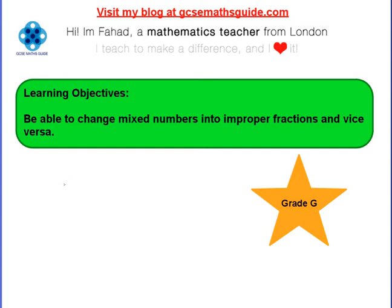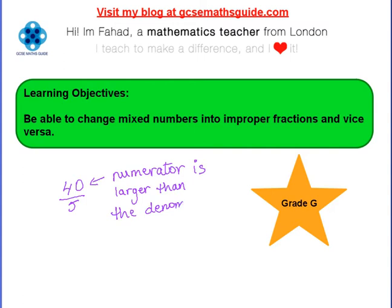40 over 5. This is an improper fraction because the top number, the numerator, is larger than the denominator. So an improper fraction is when the numerator is larger than the denominator.